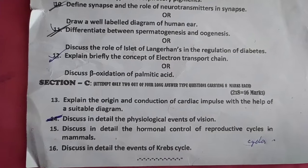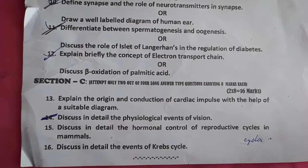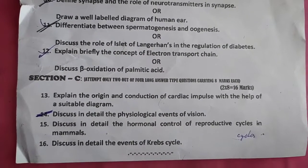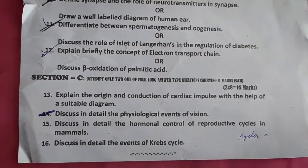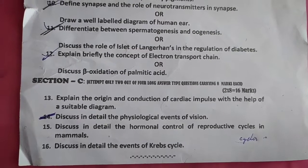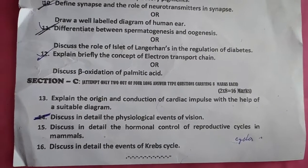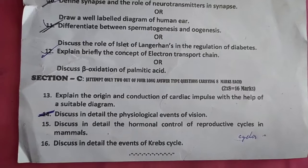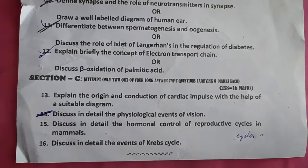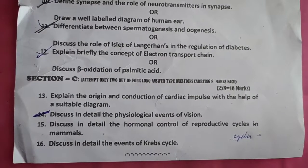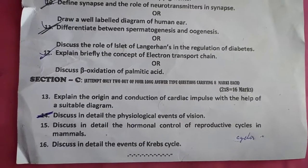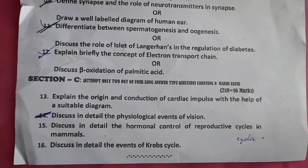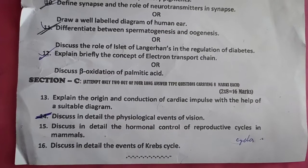Section C. Attempt only 2 out of 4 long answer type questions carrying 8 marks each. Explain the origin and conduction of cardiac impulse with the help of a suitable diagram. Discuss in detail the physiological events of vision. Discuss in detail the hormonal control of the reproductive cycle in mammals.